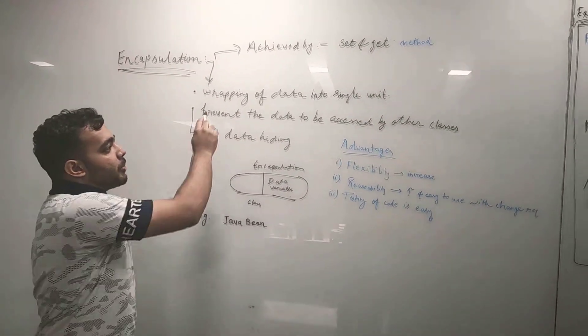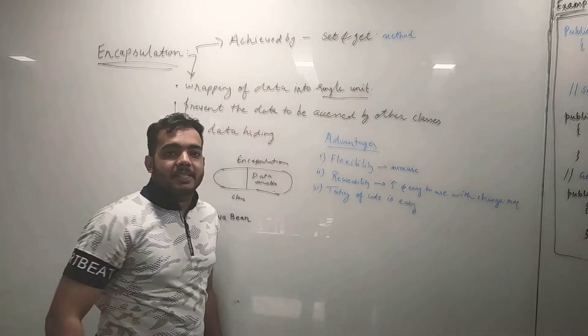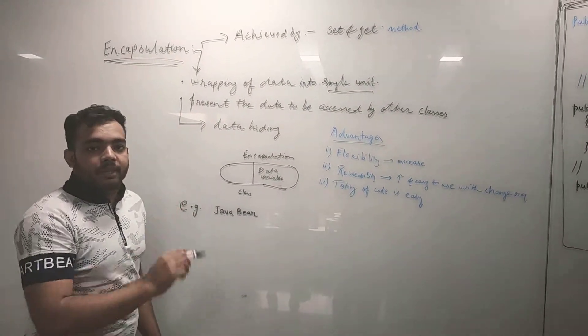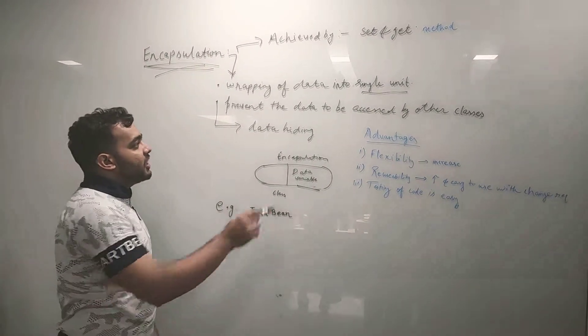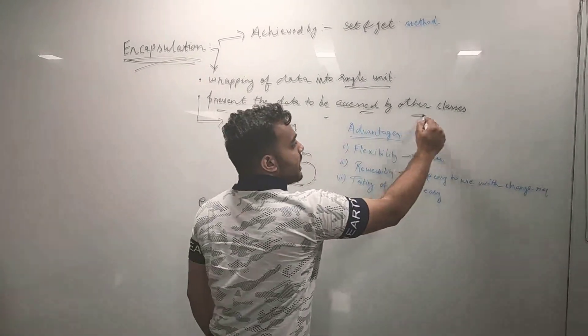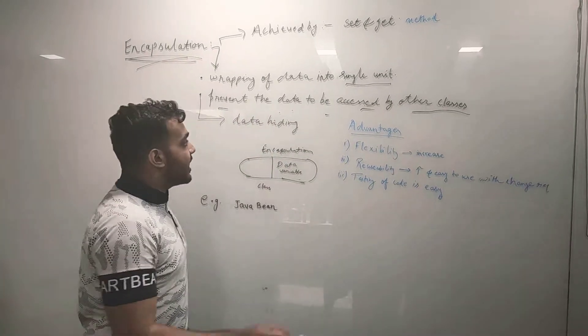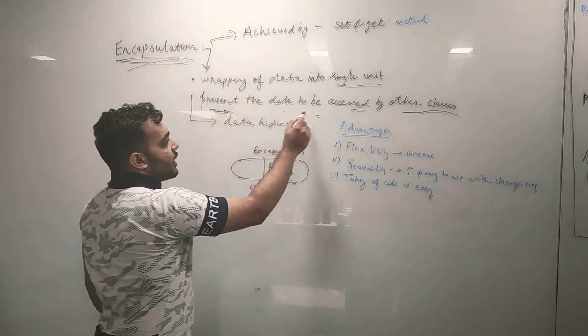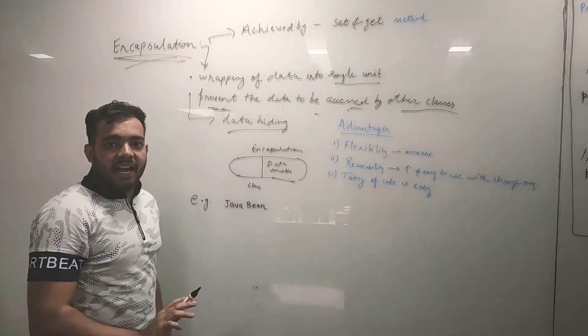Encapsulation is wrapping of data into a single unit. This means wrapping the variables and methods into a single unit. By using Encapsulation, we can prevent the data to be accessed by other classes by making the variables as private. This process can also be known as data hiding.